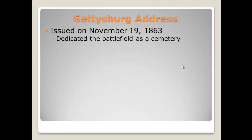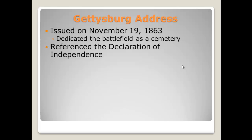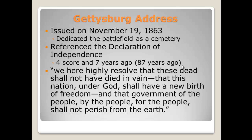The Gettysburg Address was issued on November 19th, 1863. Lincoln dedicated the battlefield as a cemetery and referenced the Declaration of Independence. He said 'four score and seven years ago,' which stands for 87 years prior to 1863, meaning 1776. In conclusion, he said 'we here highly resolve that these dead shall not have died in vain' — meaning they should not have died for nothing — and that this nation shall have a new birth of freedom, referencing the idea of abolishing slavery.